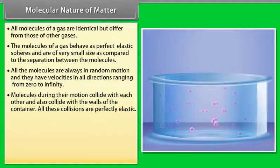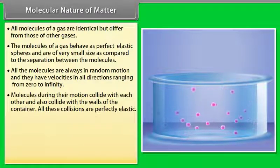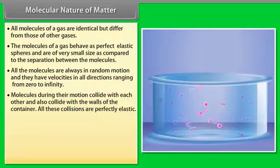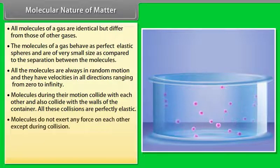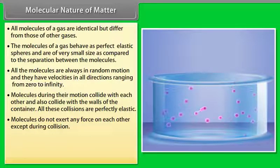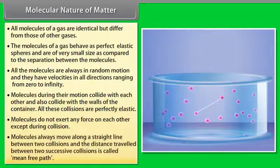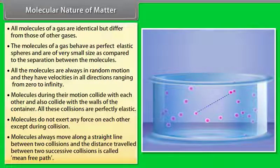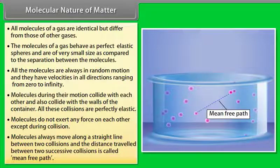Molecules during their motion collide with each other and also collide with walls of the container. All these collisions are perfectly elastic. Molecules do not exert any force on each other except during collision. Molecules always move along a straight line between two collisions, and the distance travelled between two successive collisions is called mean free path.